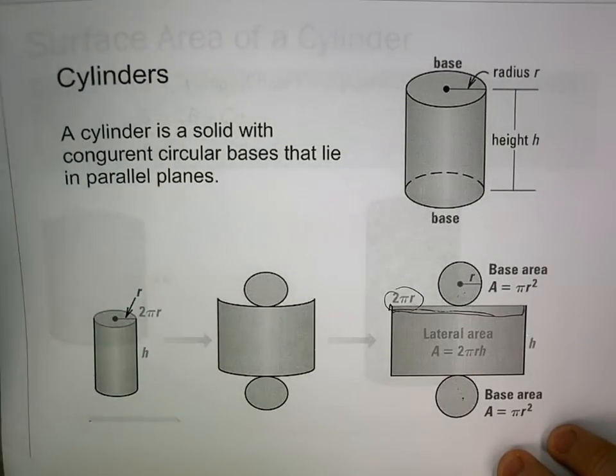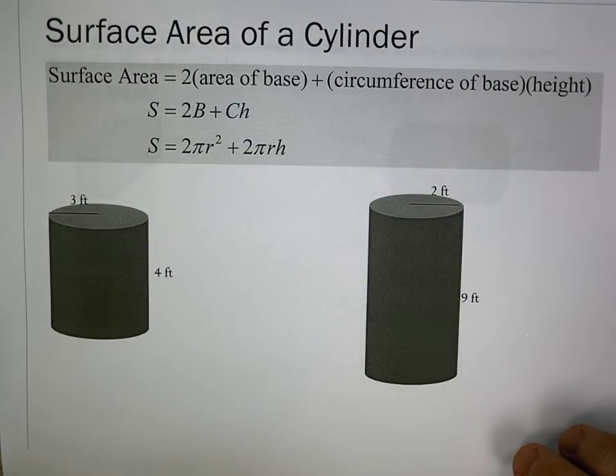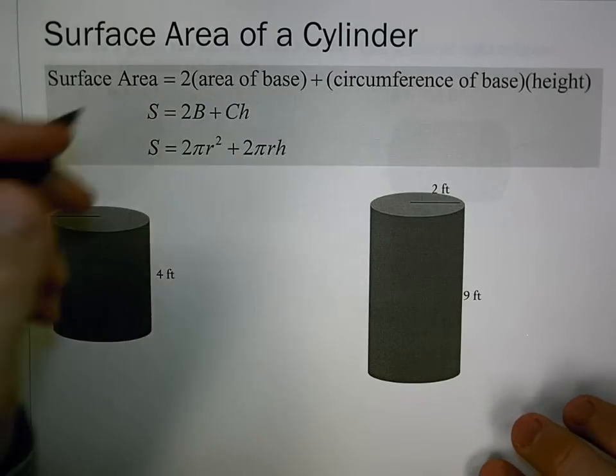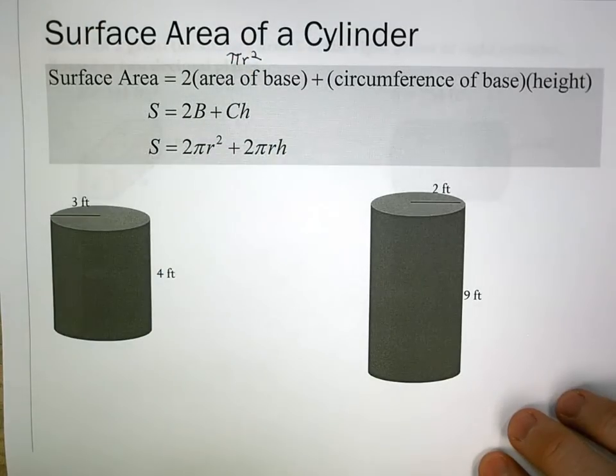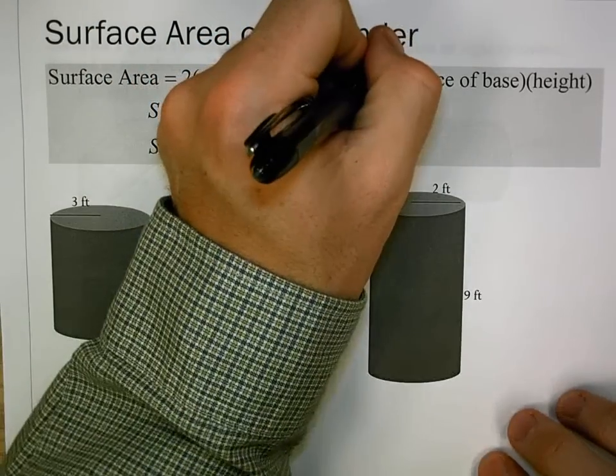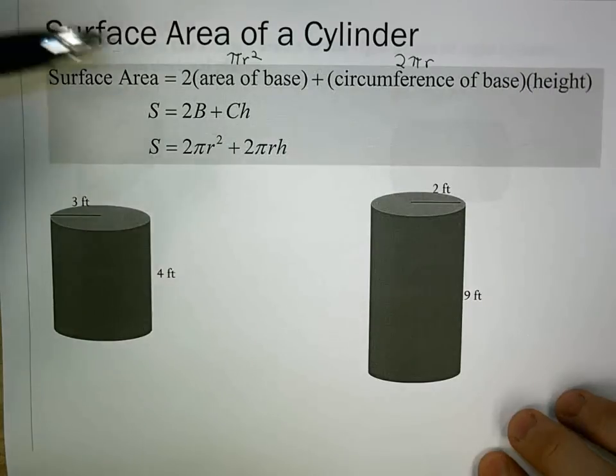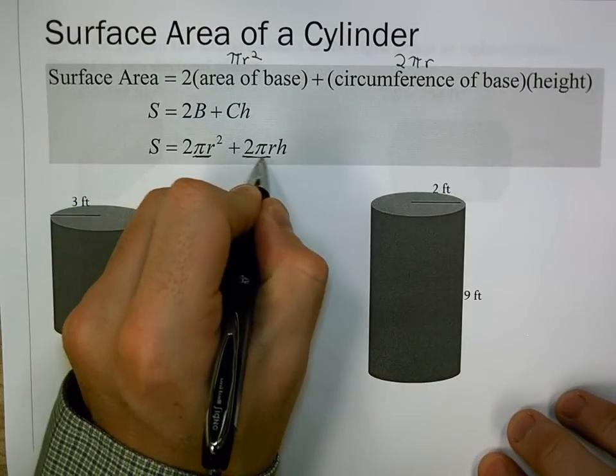The surface area of a cylinder is two times the area of the base plus the circumference of the base times the height. Since it's a circle, the area is πr², and the circumference is 2πr. We can plug those into our formula to get 2πr² plus 2πrh.